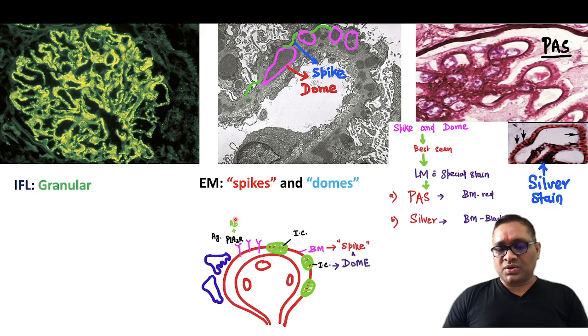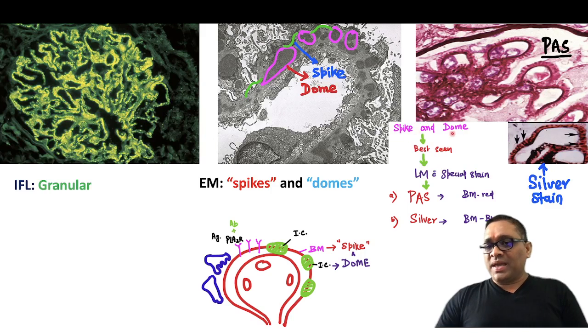So you can see in this picture also, I have shown you antibodies are formed against phospholipase A2 receptor. And this is going to form the immune complexes. So immune complexes are like a dome and in between basement membrane is like a spike. But remember, spike and dome best seen by light microscopy with a special stain like PAS and silver.